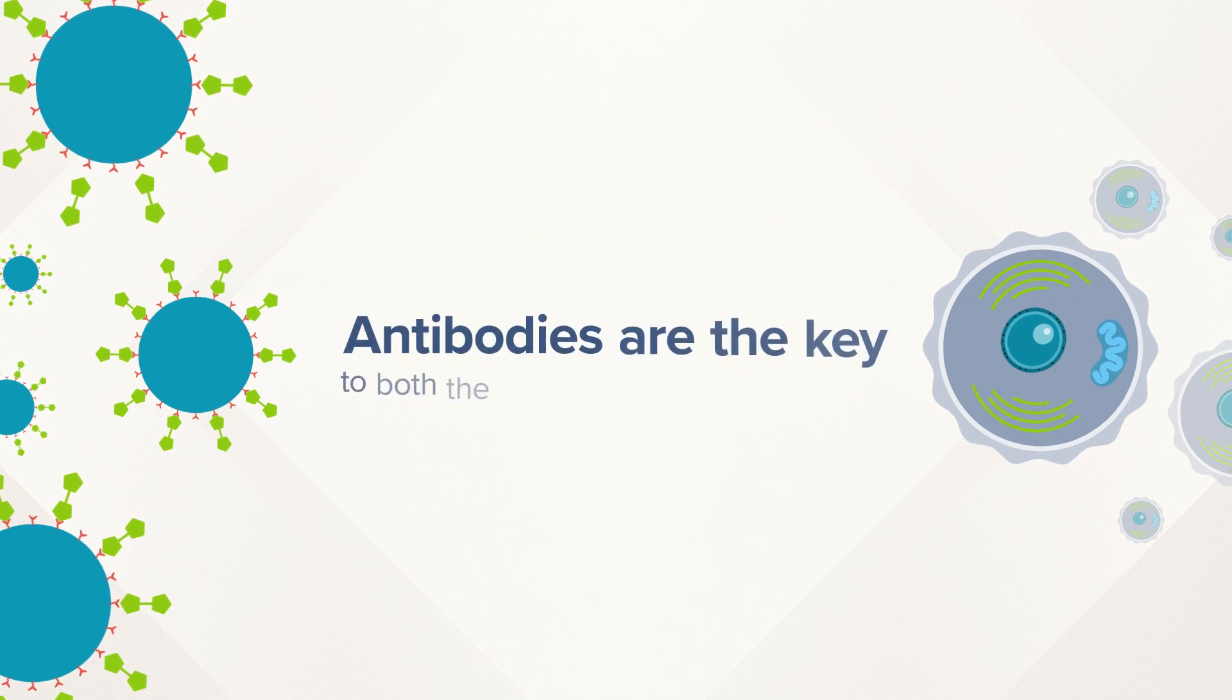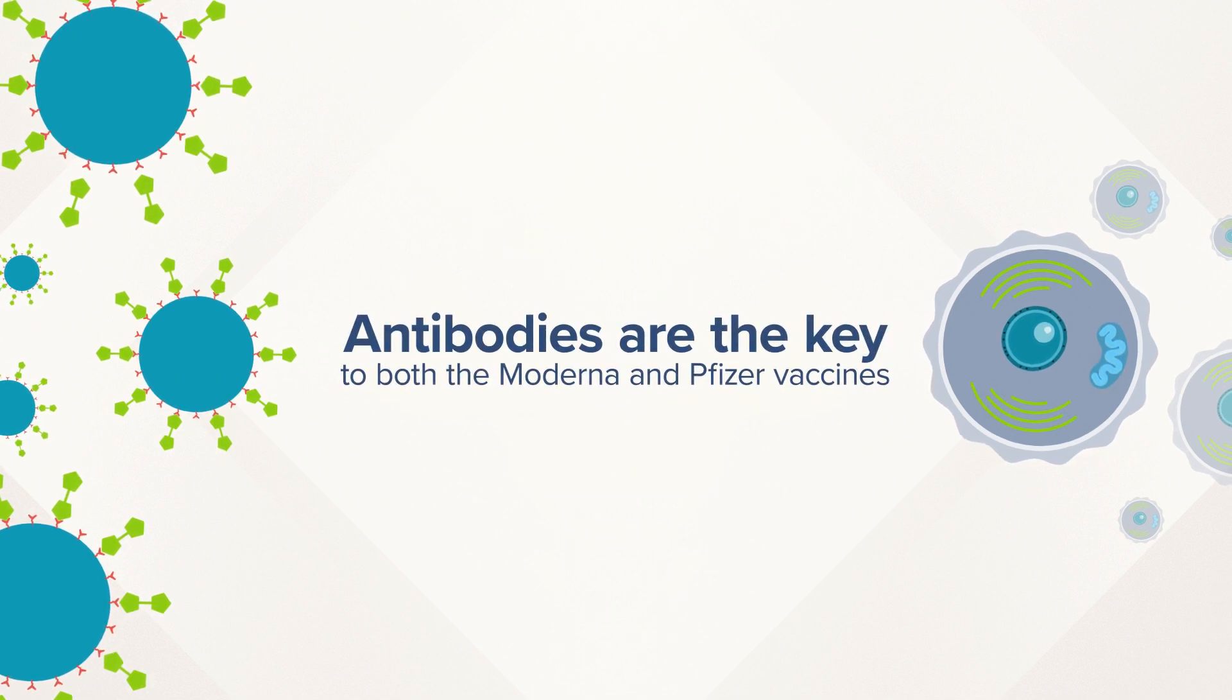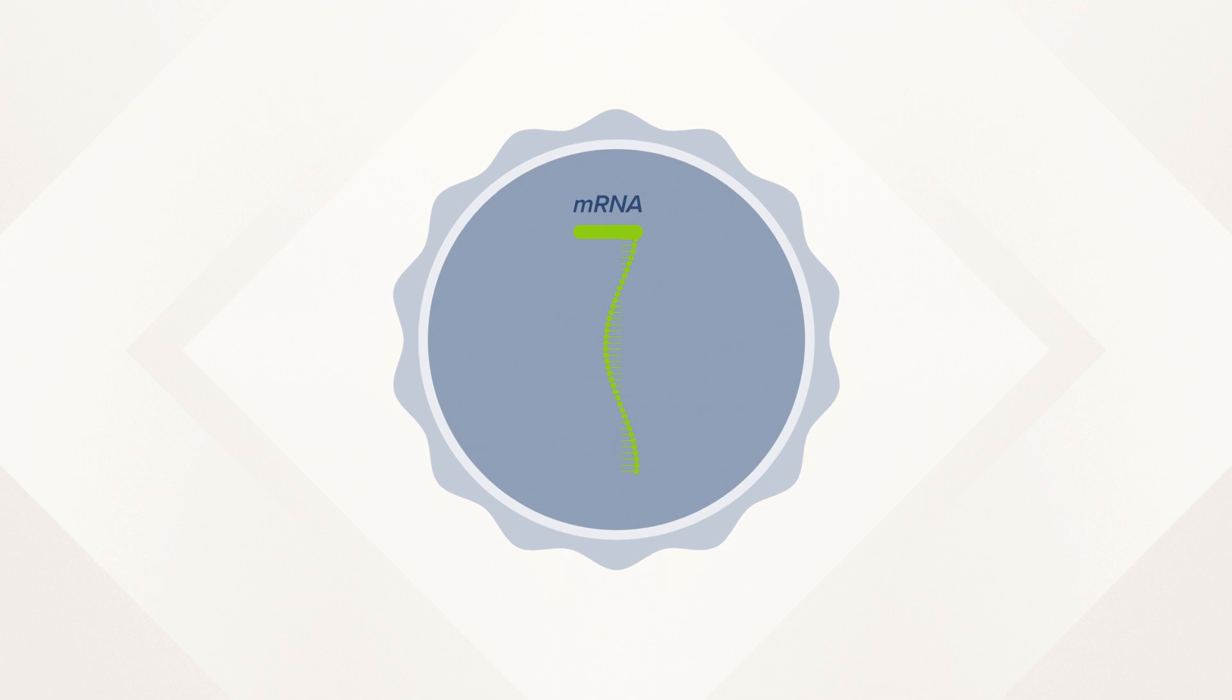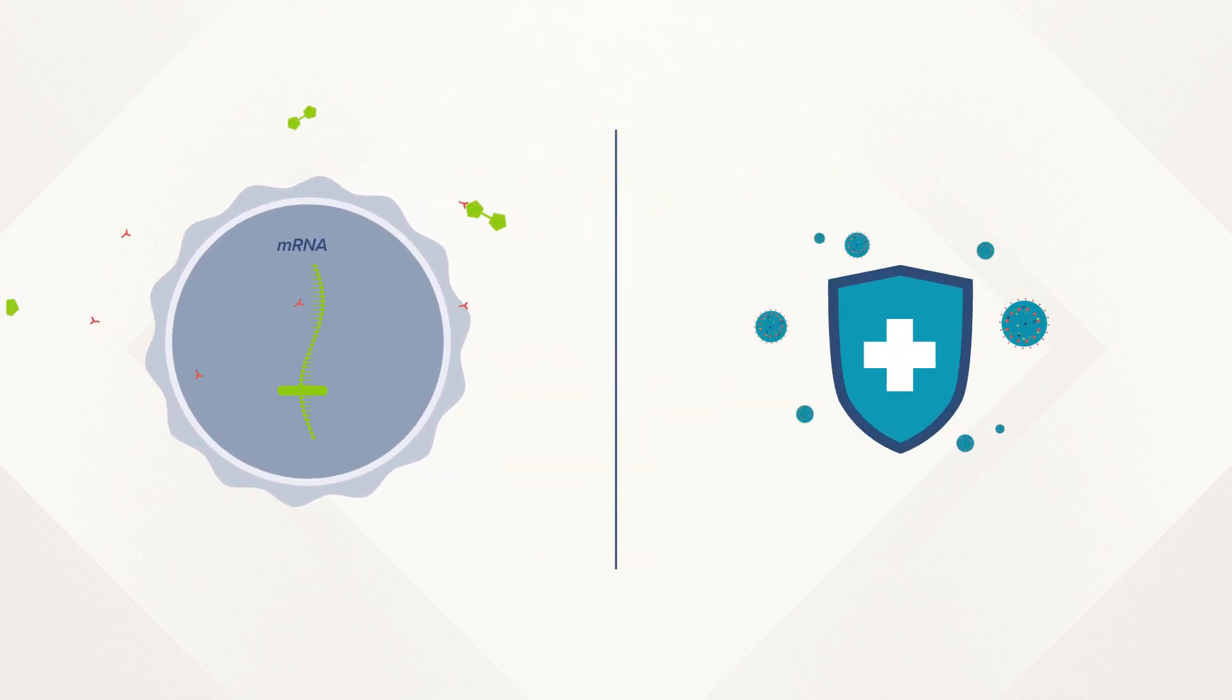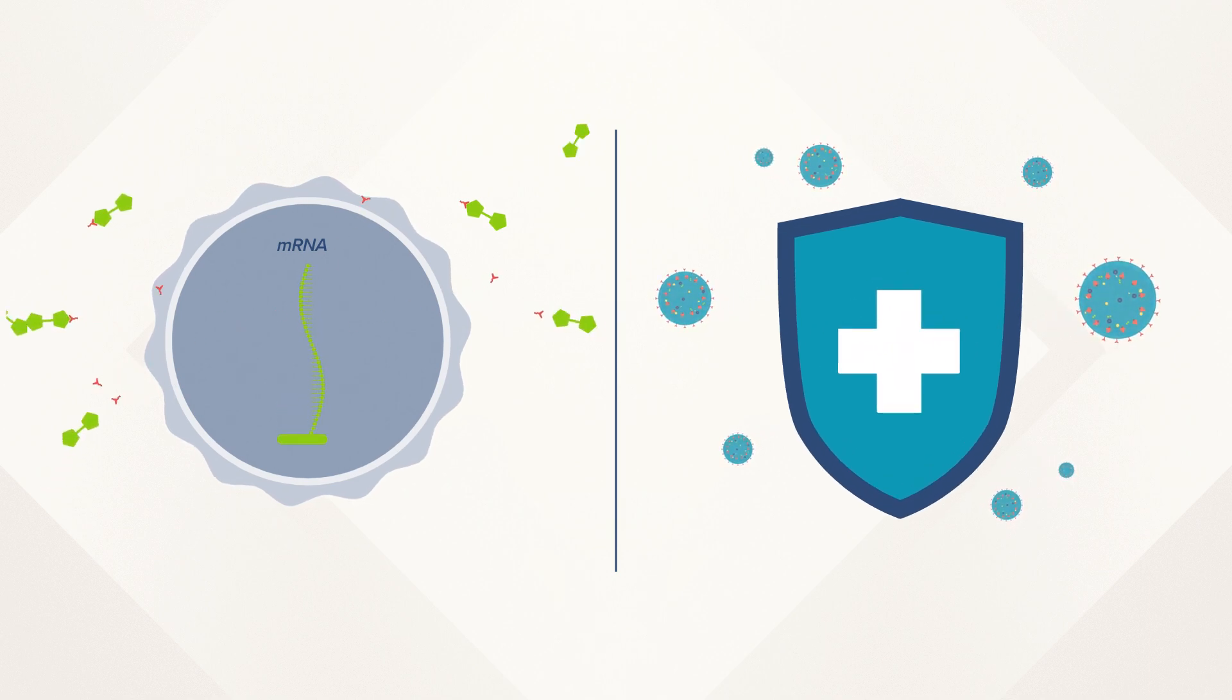And that's the key to both the Moderna and Pfizer vaccines. Each uses messenger RNA to construct the coronavirus spike protein. The immune system rushes in to defend against the protein, and you build immunity to the virus.